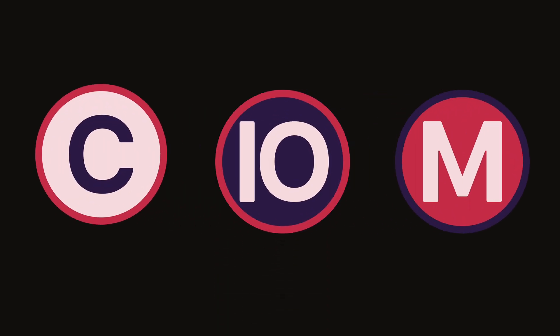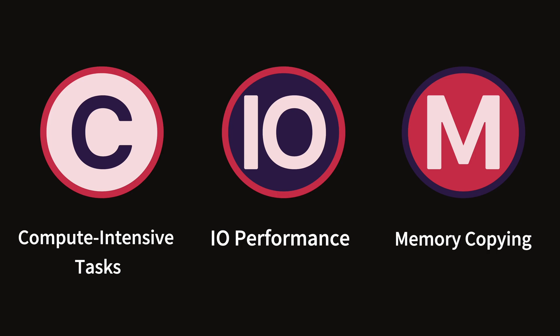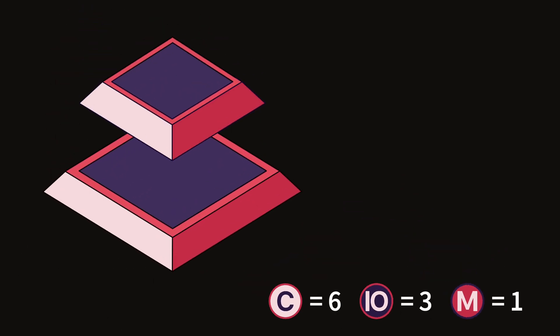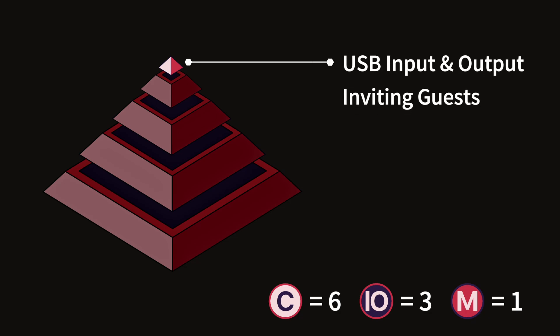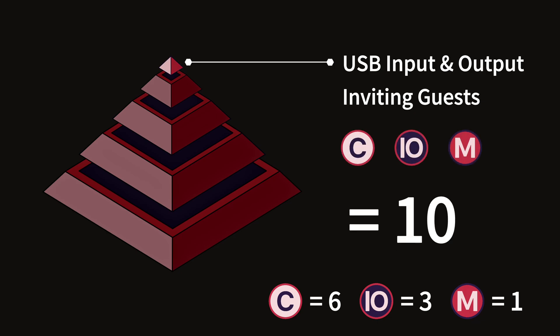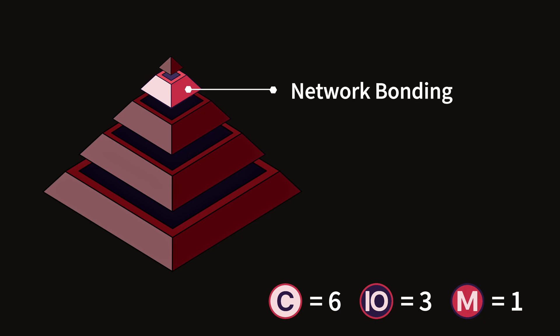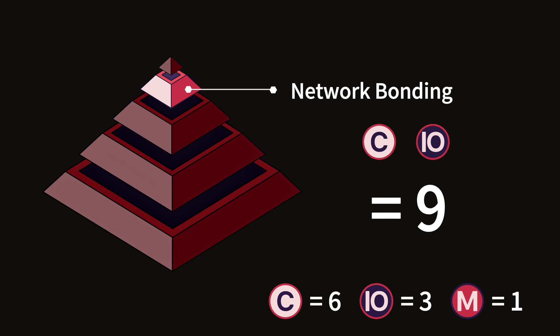We'll use the three categories along with their weights as indicators to visually compare the performance consumption levels of various functions. At the top of the gradient are USB input and output and inviting guest, both of which consume CPU across compute-intensive tasks, IO performance, and memory copying. Next up is network bonding, which involves compute-intensive tasks and IO performance — a weighting index of nine — and more channels increase consumption, while a poor network exacerbates it.